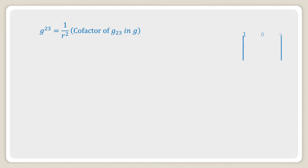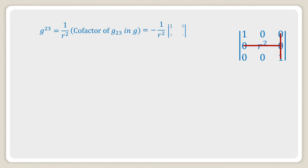g^23 is equal to one over r² into the cofactor of g_23 in g, which is equal to minus one over r² into the determinant of 1, 0; 0, 0, which is equal to zero.